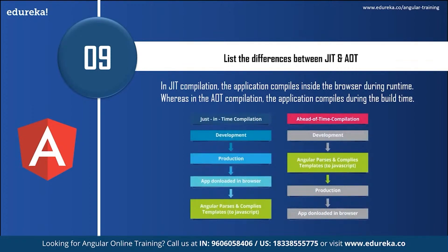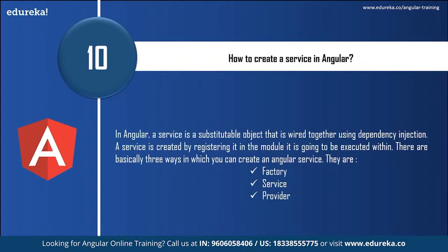List the differences between JIT (Just-in-Time) compilation and AOT (Ahead-of-Time) compilation. In Just-in-Time compilation, the application compiles inside the browser during runtime, whereas in AOT, the application compiles during build time. The differences are shown in the flowchart here — have a look at it.